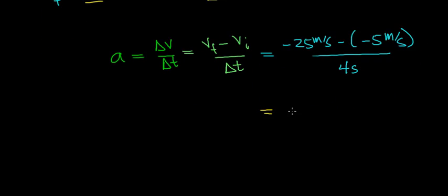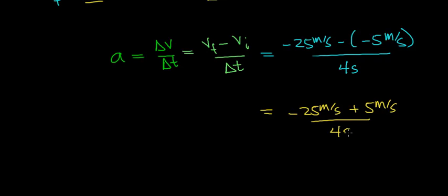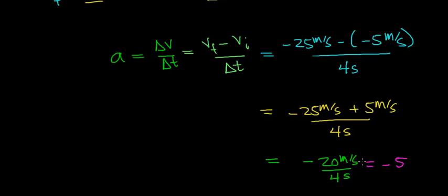Negative 25 meters per second minus negative 5 — a negative times a negative is a positive, giving us negative 25 plus 5, which works out to negative 20 meters per second. Dividing that by 4 seconds gives us negative 5 meters per second squared. This is how fast the velocity of this car is going to change.